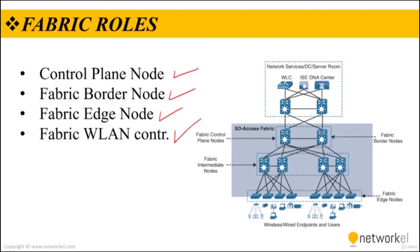The control plane node contains the settings, protocols, and tables to provide the endpoint-to-location mapping system for the fabric overlay. The fabric border node connects the fabric overlay to outside networks. The fabric edge node contains the protocols and tables to provide wireless endpoint onboarding and host mobility for the fabric overlay.